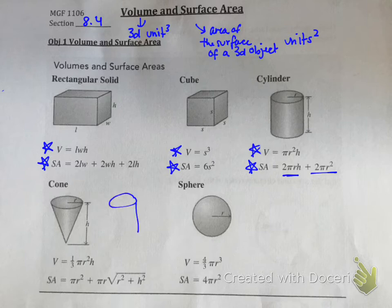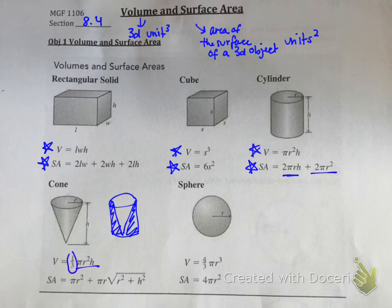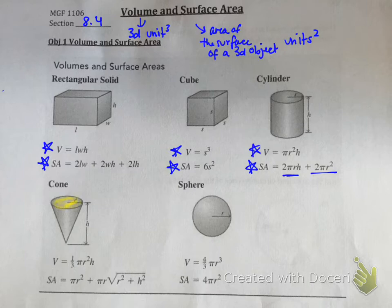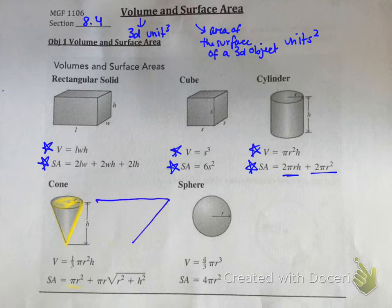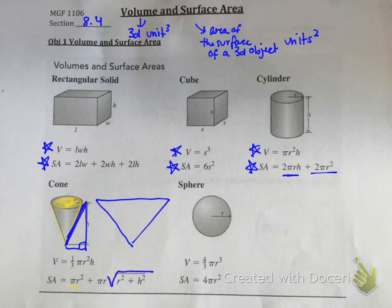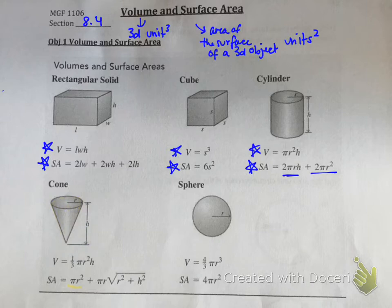If you know the cylinder, the cone is easier to understand — a cone is like a cylinder with two-thirds cut off. So the volume is still pi r squared h, but multiplied by one-third. The surface area is a bit more complex. The base is pi r squared. The slanted side, when unpacked, uses the Pythagorean theorem to get the slant height: the square root of r squared plus h squared. The side surface becomes pi r times that slant height. So the surface area of a cone is pi r squared plus pi r times the square root of r squared plus h squared.